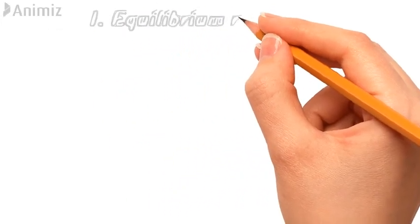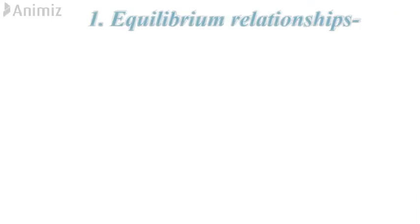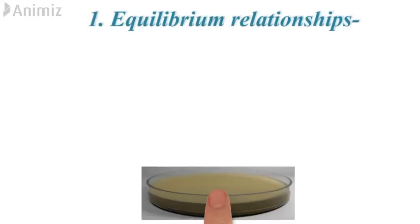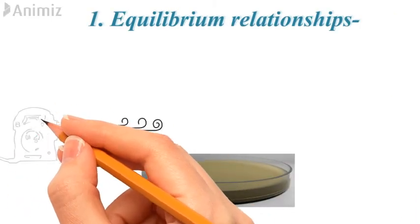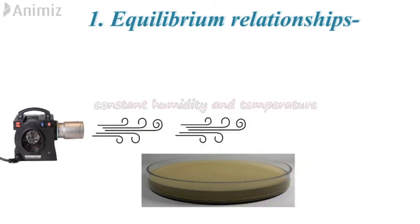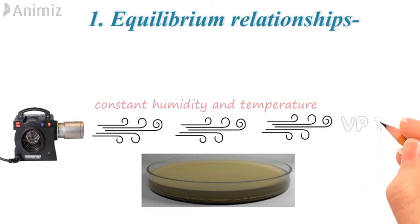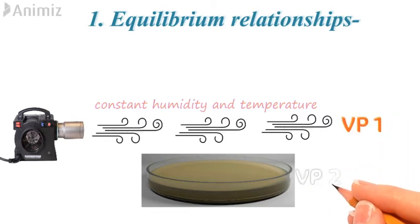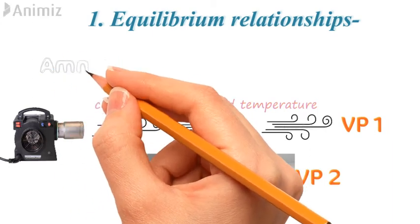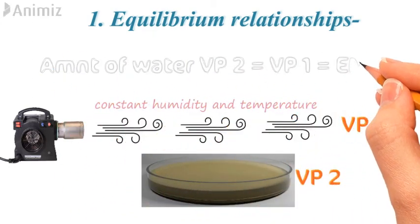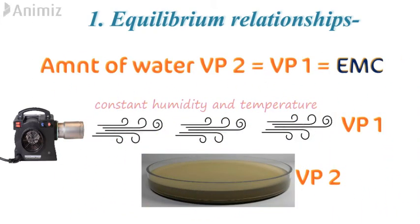The first theory is called the equilibrium relationship. Suppose for drying a wet material, air of constant humidity and temperature is passed over it, and after a long exposure an equilibrium is attained between these two. The humid air passing over the material has a vapour pressure of VP1 and the wet mass has a vapour pressure of VP2. The amount of water which exerts a vapour pressure equal to the vapour pressure of the surrounding atmosphere is called the equilibrium moisture content (EMC).